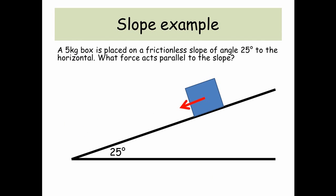So let's have a look at an example. A 5 kilogram box is placed on a frictionless slope of angle 25 degrees to the horizontal. What force acts parallel to the slope? So it's MG sin theta. MG sin theta is equal to 5 times 9.81 times sin of 25, which is equal to 21 newtons.